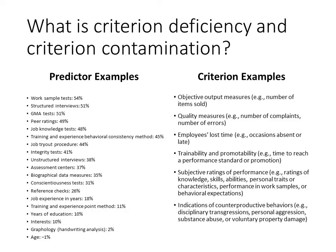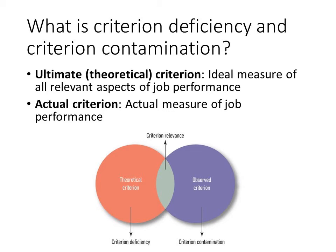Remember that the goal is to find a predictor that explains a great deal of variance in the criterion data. Let's assume for the purposes of this lecture that the criterion we are trying to measure is job performance. The ultimate criterion, or the theoretical criterion, is the best, most perfect measure of job performance — it measures all aspects of performance.